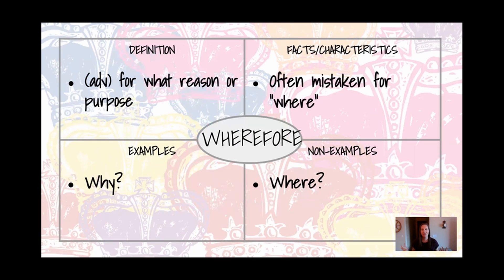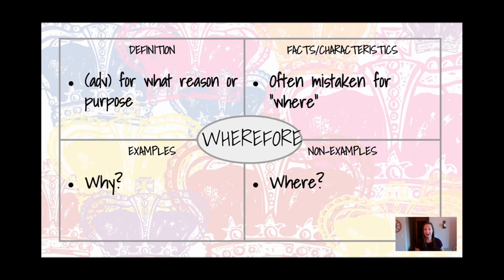You can see that here in this straightforward chart showing its definition. It is actually an adverb, and it means 'for what reason or purpose.' It is often mistaken for 'where' because that's the first part of the word. Synonyms would include the word 'why' — it means 'why' — and a non-example is that it does not mean 'where.'